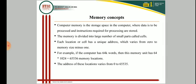If the computer has 64,000 words as memory size, then this memory unit has 64 into 1024, that is 65,536 memory locations. The address of these locations varies from 0 to 65,535. Since 0 has been included, the total number of locations is still 65,536.